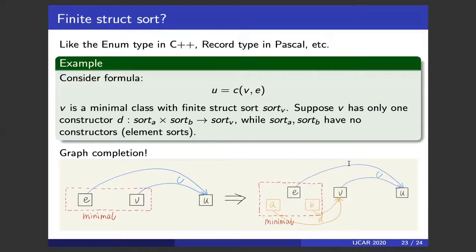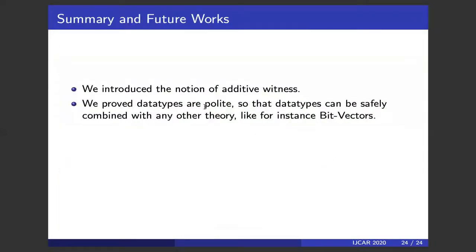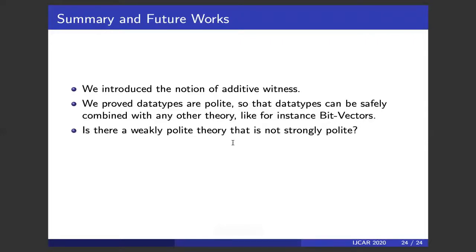Together with additivity and smoothness, we have proved that the data type theory is polite, meaning data types can be safely combined with any other theory, including bit vectors. As a summary: we introduced the notion of additive witness and proved data types are polite. One open question remains: is there a weakly polite theory that is not strongly polite? We cannot find a counterexample, so this question remains open. That's all — thanks for listening.